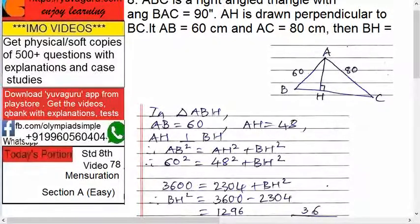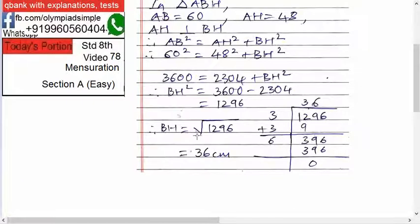Now, we want BH. BH equals to square root of 1296. You can either follow Vedic Maths or you can follow this division method which you had studied in 5th, 6th. So, 1296, try this, go through this and it is 36. So, BH equals to 36 centimeters.